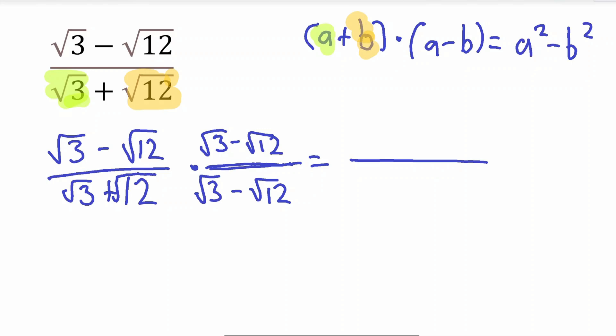We're multiplying (a + b)(a - b), which gives us a² - b². Our a is square root of 3, and squaring a square root cancels them out, so square root of 3 squared is just 3. Similarly, square root of 12 squared is just 12. So our denominator simplifies to 3 minus 12.